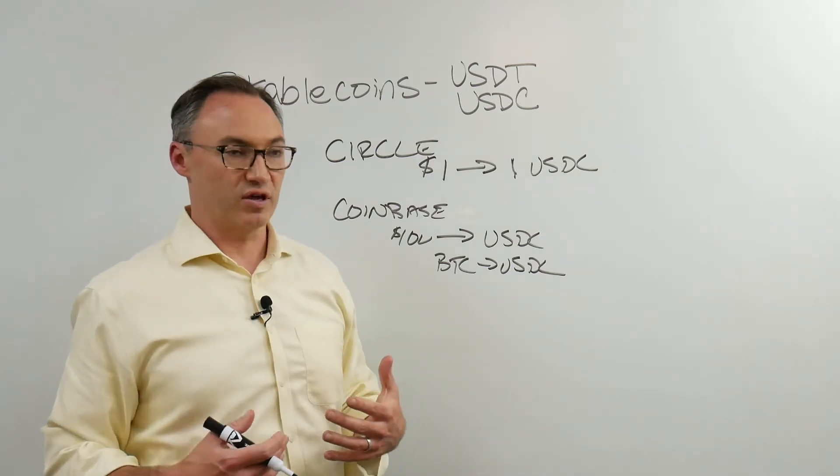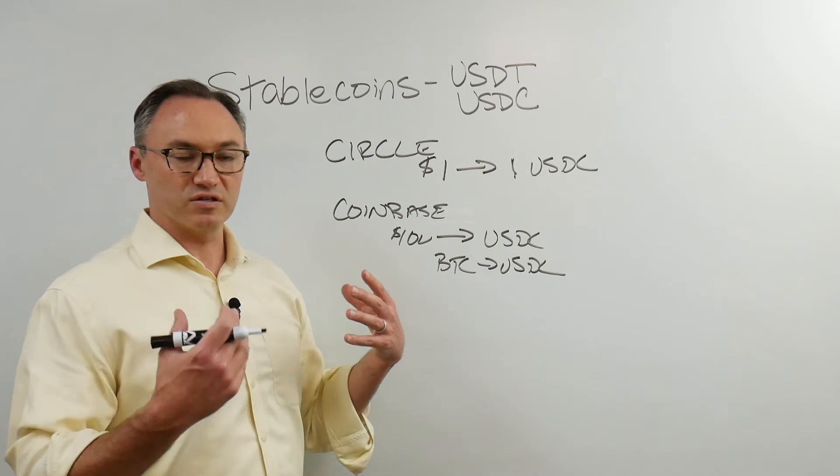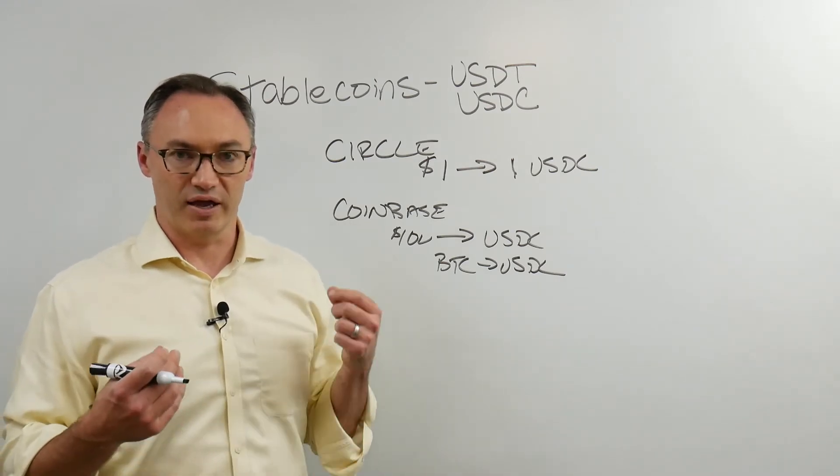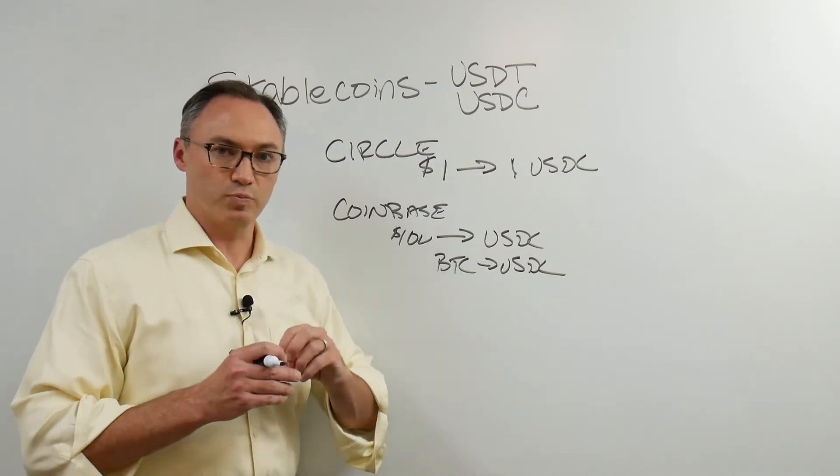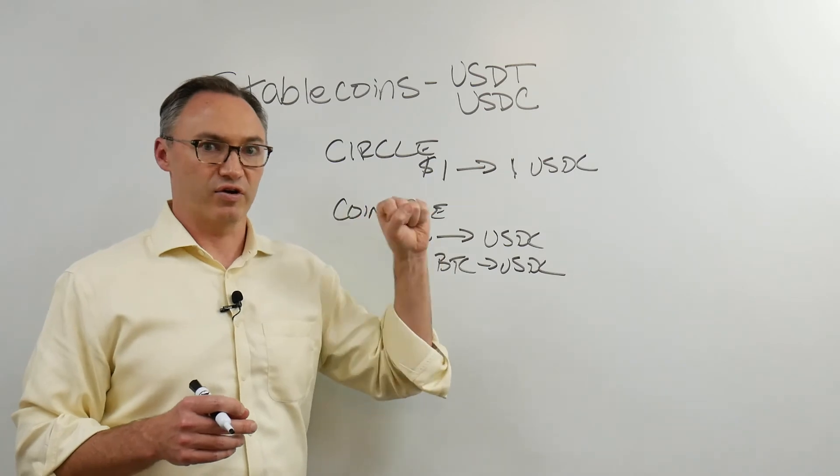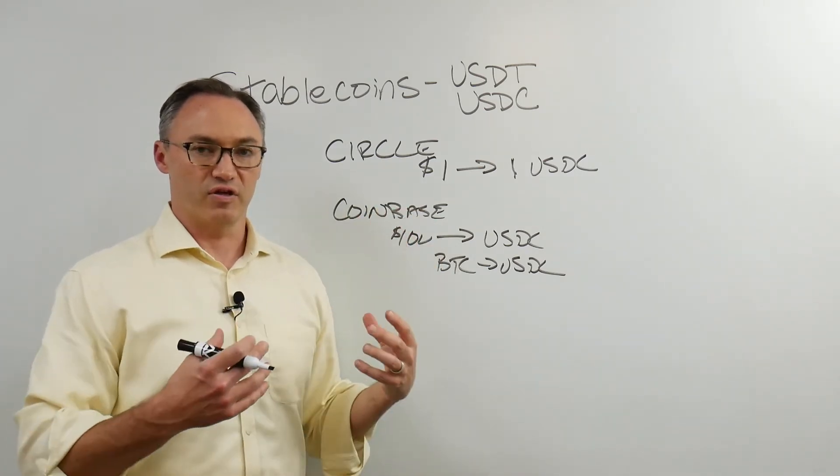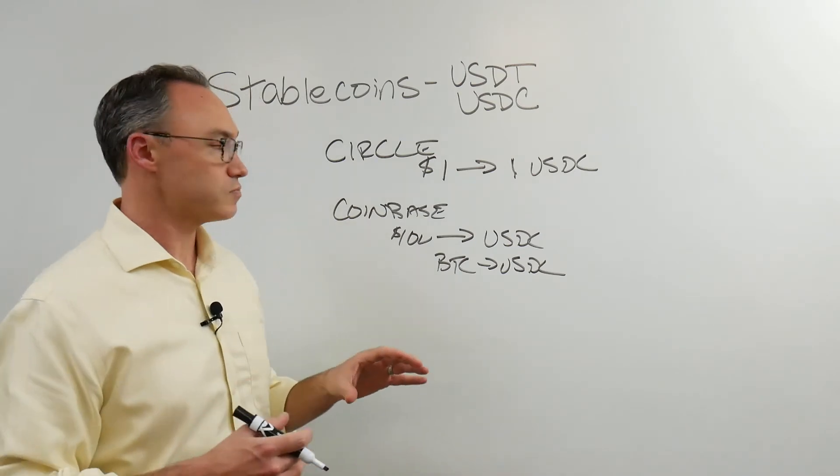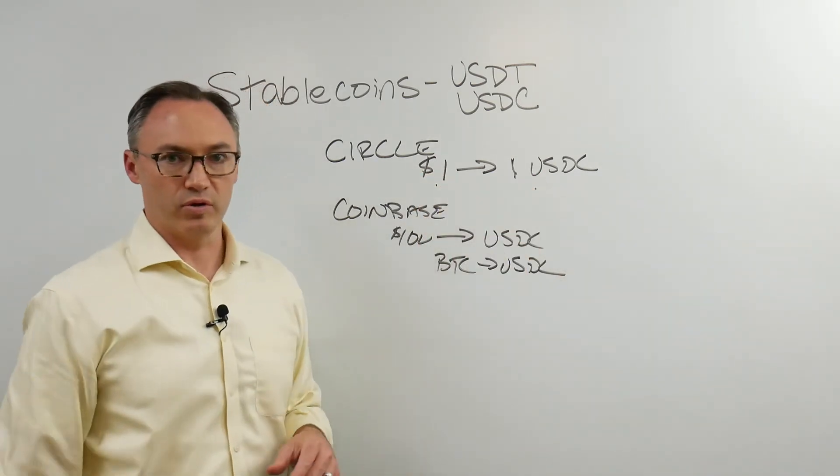And so now what we're seeing is people are having a lot of faith in USDC because it's actually backed by a real US dollar. So what Circle said is we're going to put off the monetary policy onto the Fed, onto the US Fed. They're going to decide what a dollar is worth. They're going to decide the basket of goods that we can buy. All we're going to do is we're going to take your fiat dollar, and we're going to create programmable dollars.